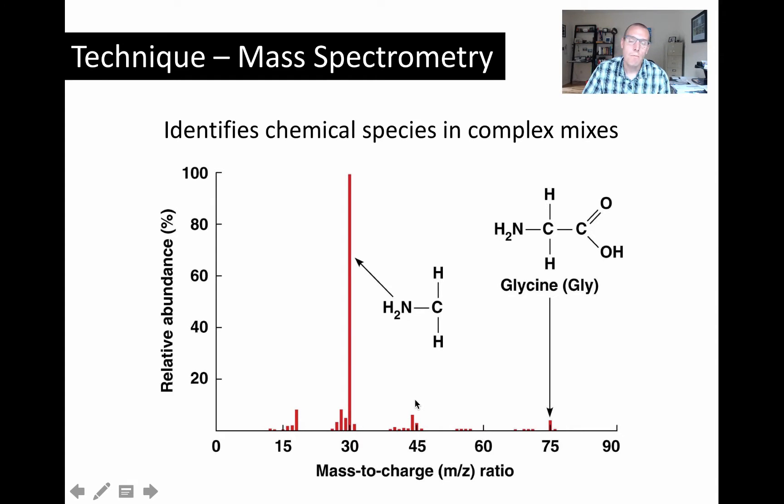Based on known fingerprints of certain standards and other molecules, we know that with a mass-to-charge ratio of 30, that is most likely to be this structure here. We can look at simple structures like glycine, a simple amino acid, the simplest amino acid we could draw, all the way to complex mixtures.